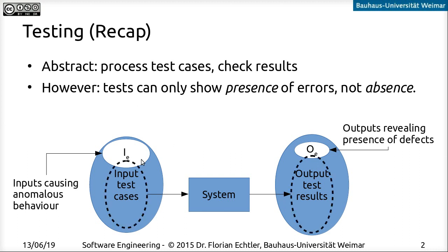So we can only ever test a subset of the input test cases. Some of them will probably intersect with those inputs that cause anomalous behavior. When we run that subset of test cases through our system and observe the outputs, a subset of the outputs will actually tell us that the system is behaving in an unexpected way. That tiny sliver — the intersection between the actual output test results we generate with our test cases and those outputs that tell us something went wrong — is all we have to conclude that an error has actually happened.